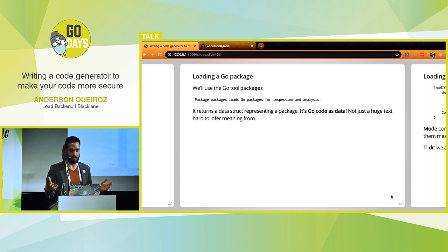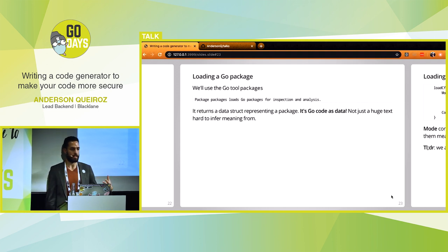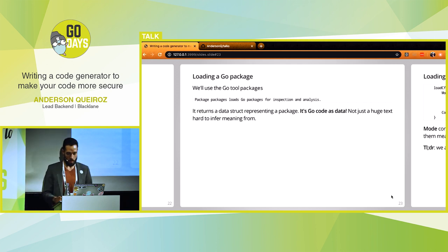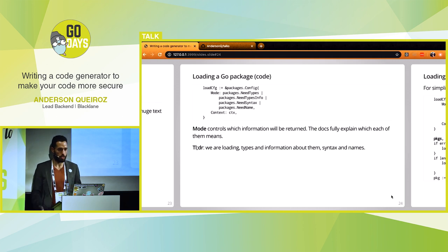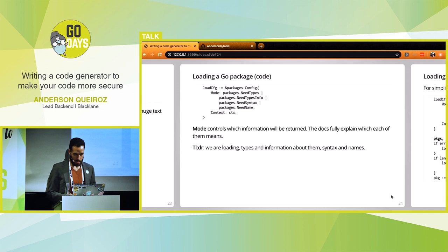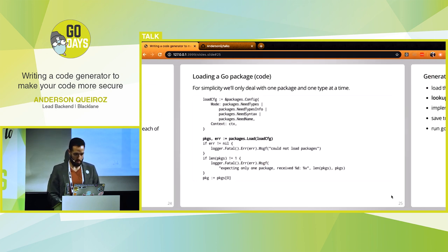Loading the package: there is the golang.org/x/tools/go/packages package that loads packages for inspection and analysis. Once we load it, we have Go source code as data structures — instead of just strings, we have something a program can understand, infer meaning from, and make decisions upon. To load a Go package, we first define a config specifying what we need — in our case the types, the syntax, and the names.